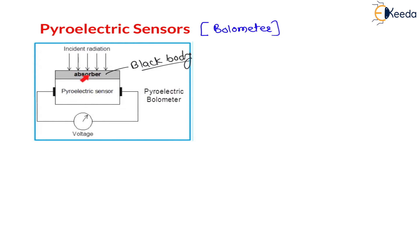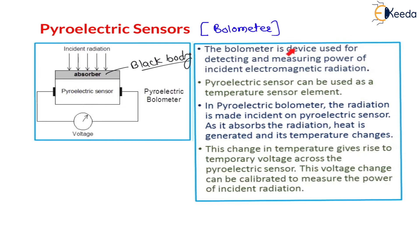As soon as the absorber absorbs the radiation coming from the sun, the temperature increases — there is heat generation. Whenever the incident radiations are absorbed by the absorber, heat is generated, the temperature increases, and because of this a voltage difference or potential is created across the two terminals. If we use a voltmeter to measure this voltage, we will see this change in voltage. This device is called a pyrometric bolometer, and by measuring the current or voltage we can measure the intensity or radiation energy.